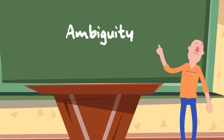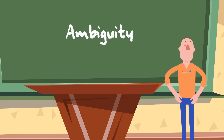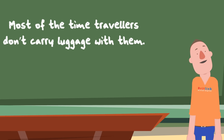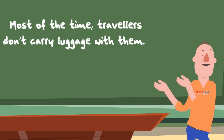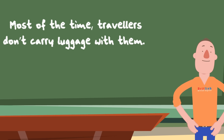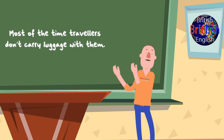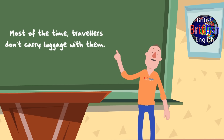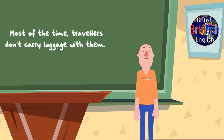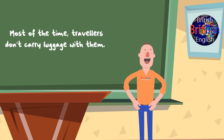As well as indicating a short pause, commas are also used to avoid ambiguity. Consider: 'Most of the time travellers don't carry luggage with them' versus 'Most of the time, travellers don't carry luggage with them.' In the first sentence, we're saying that the majority of people who travel through time don't carry luggage. In the second sentence, we're saying that travellers in general don't carry luggage with them. Say them aloud and you'll hear the natural pauses where the commas should be.